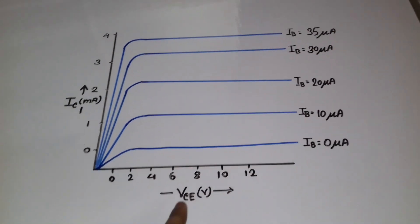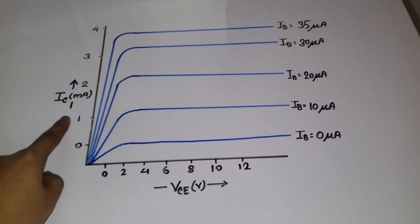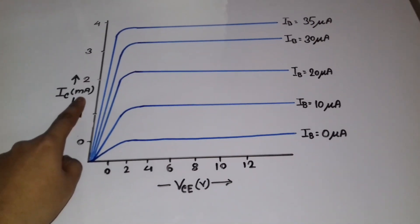So here the x-axis represents the collector-emitter voltage and the y-axis represents the collector current, which is scaled in milliampere.